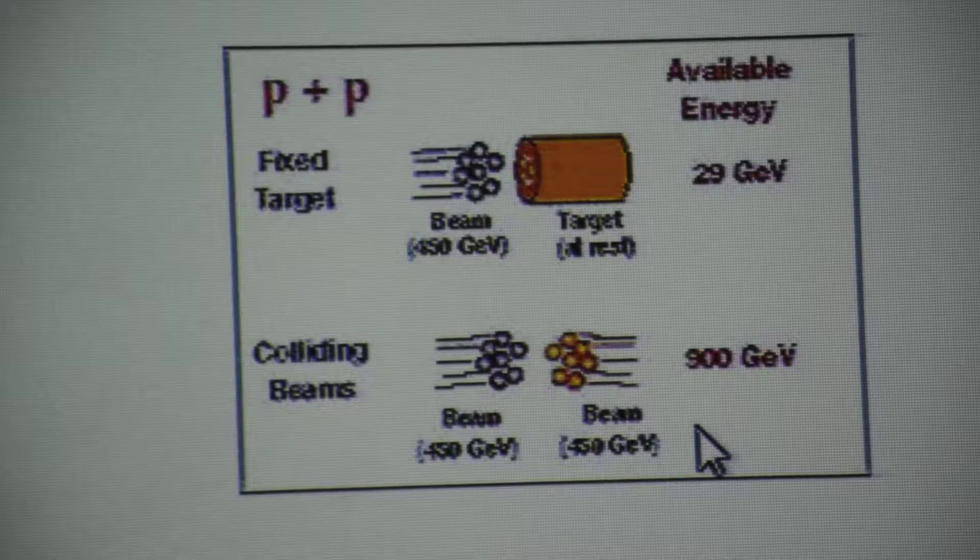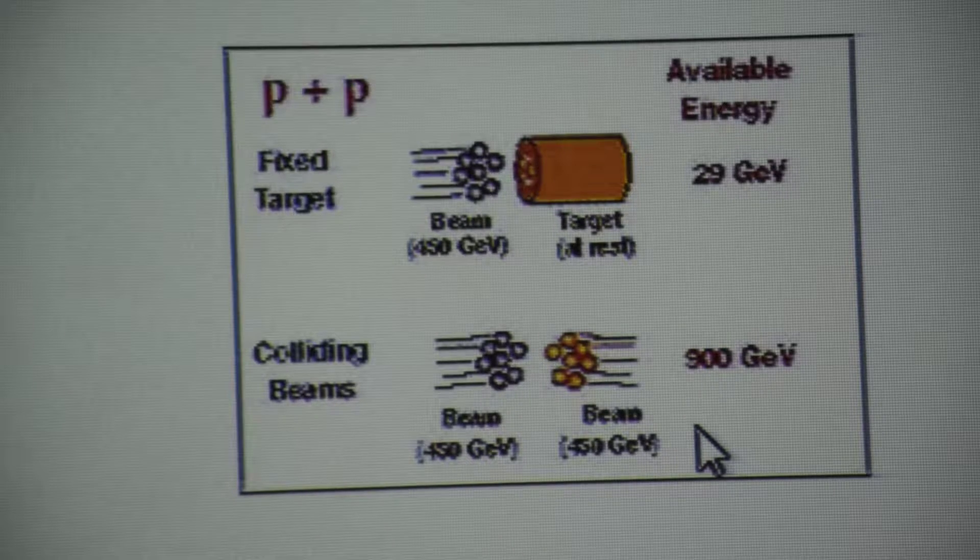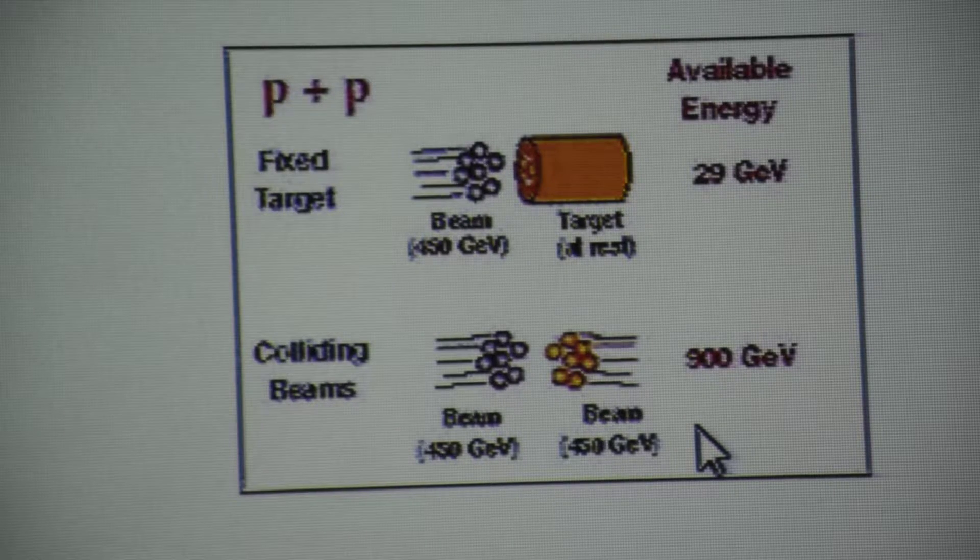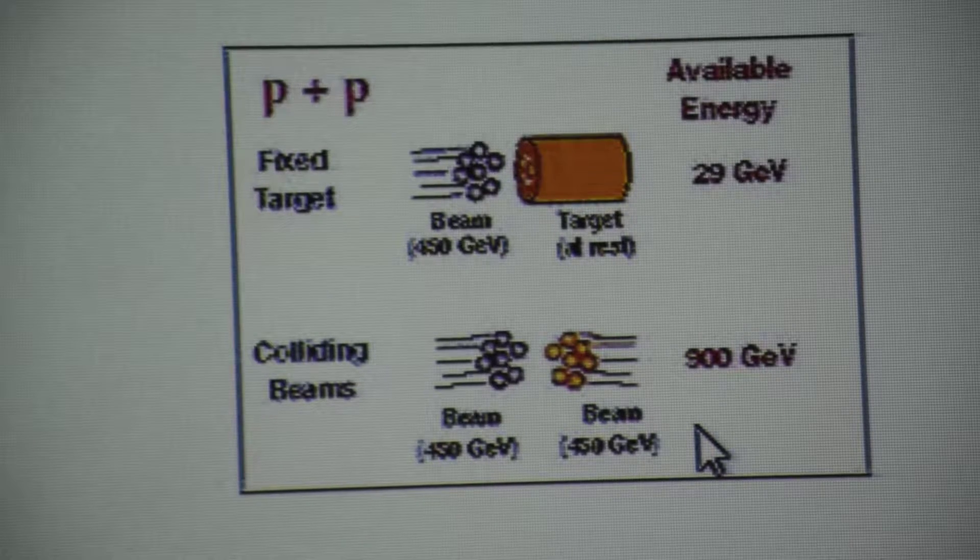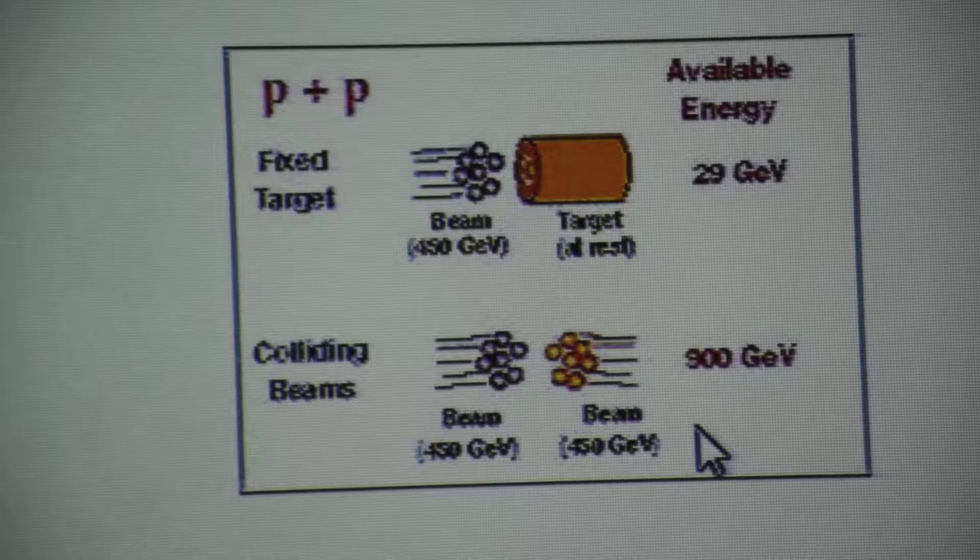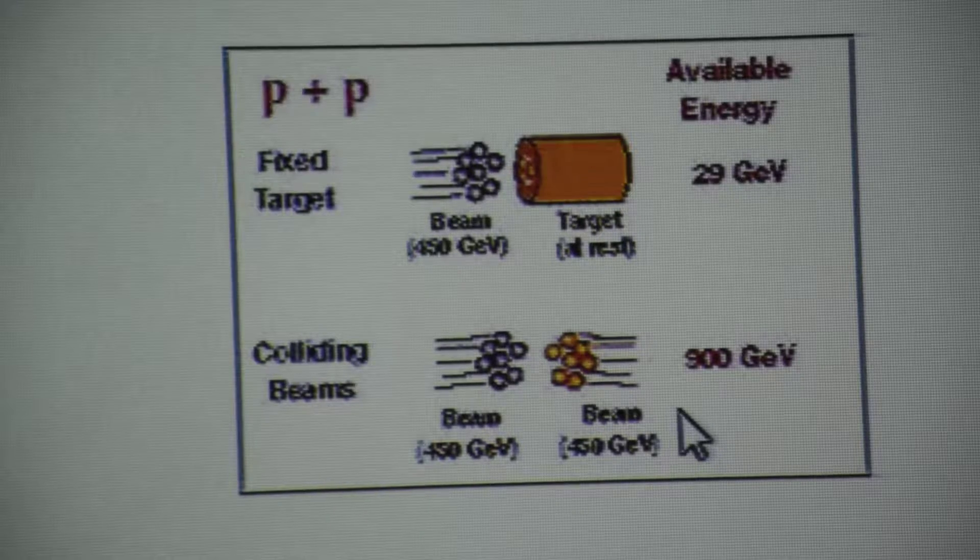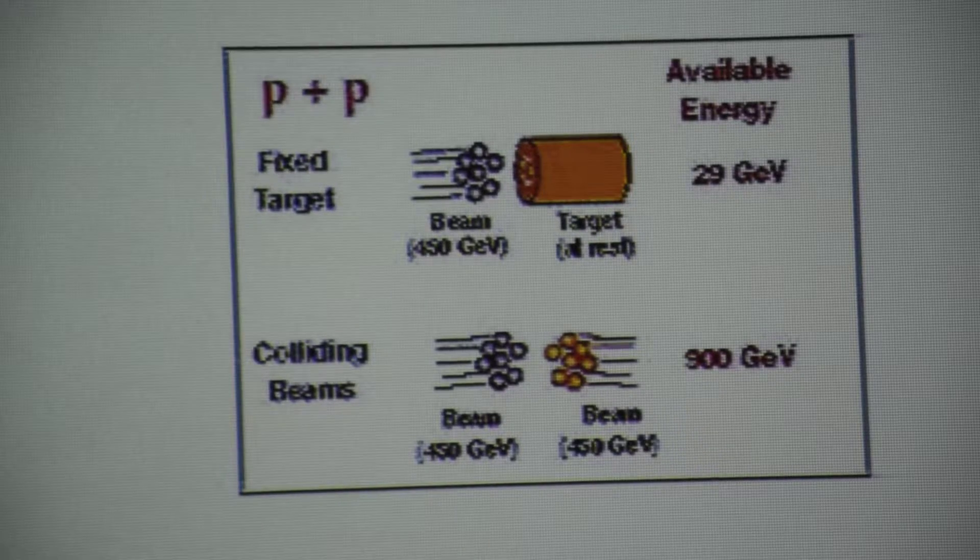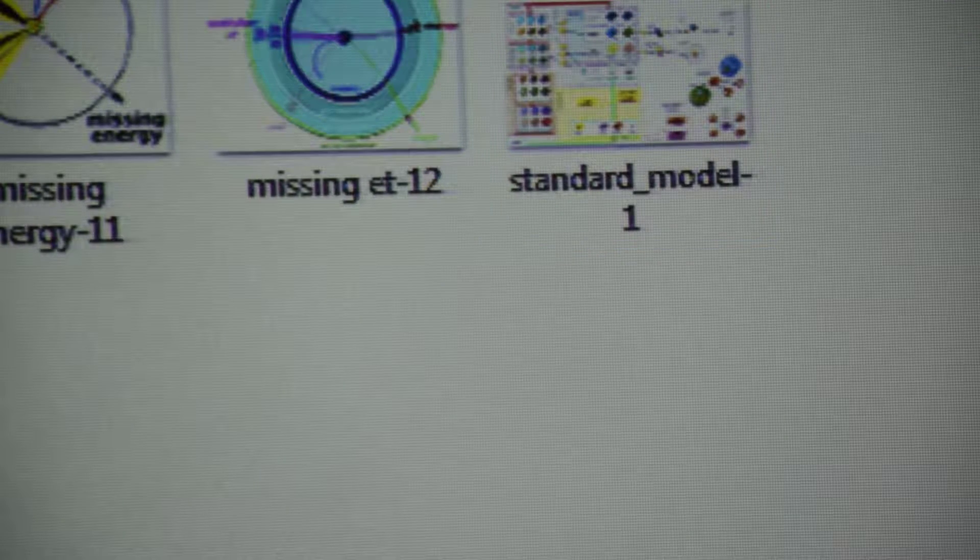This is called a colliding beam experiment as opposed to the fixed target experiment. And our talk will be essentially on this colliding beam experiments. Now, I will avoid mathematics as much as possible, but I have to do a little bit here and there. So it is better to know some basic definitions.